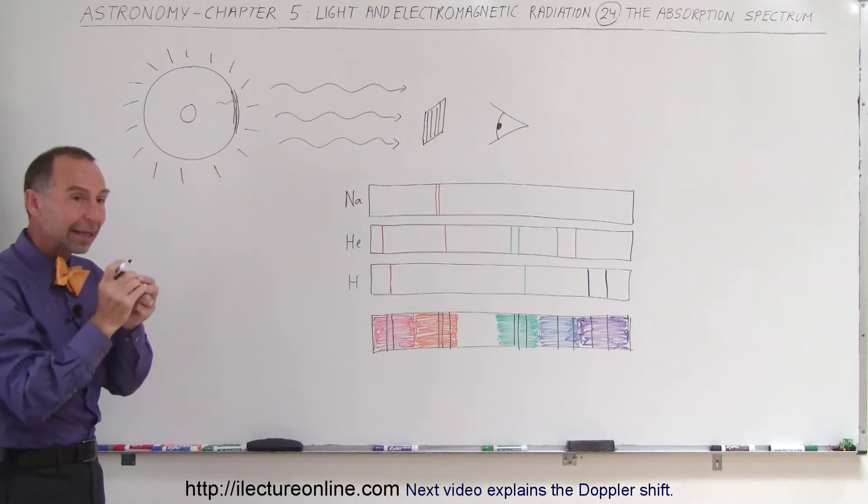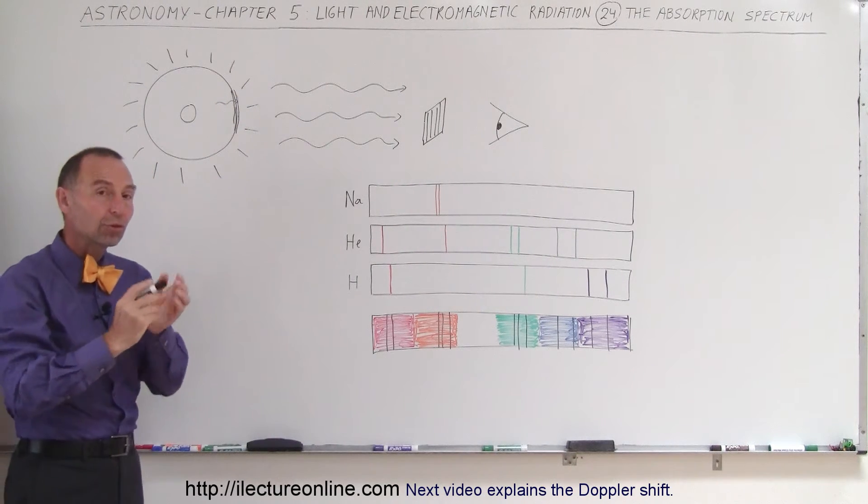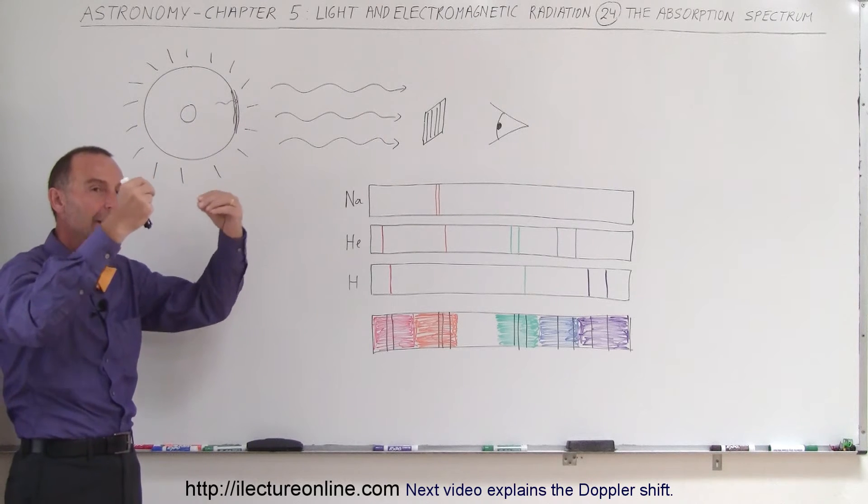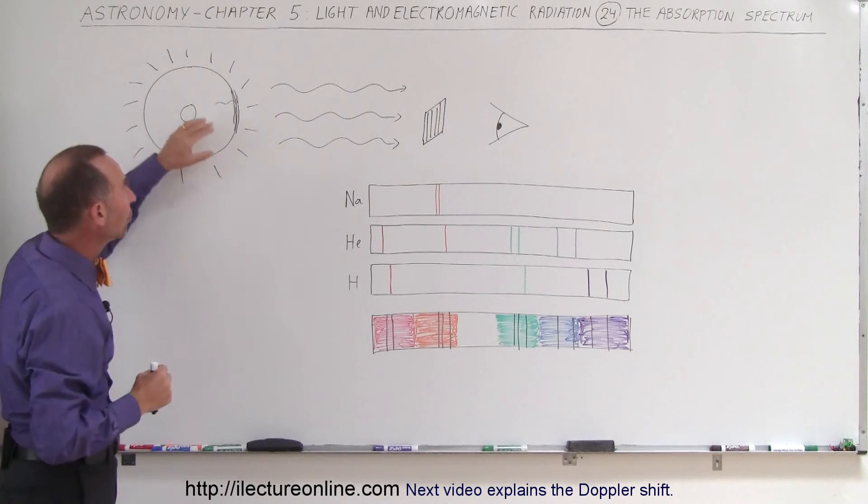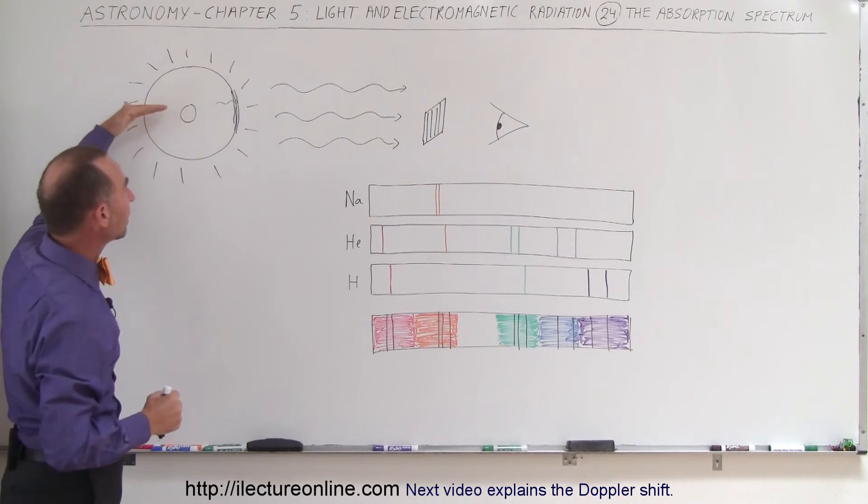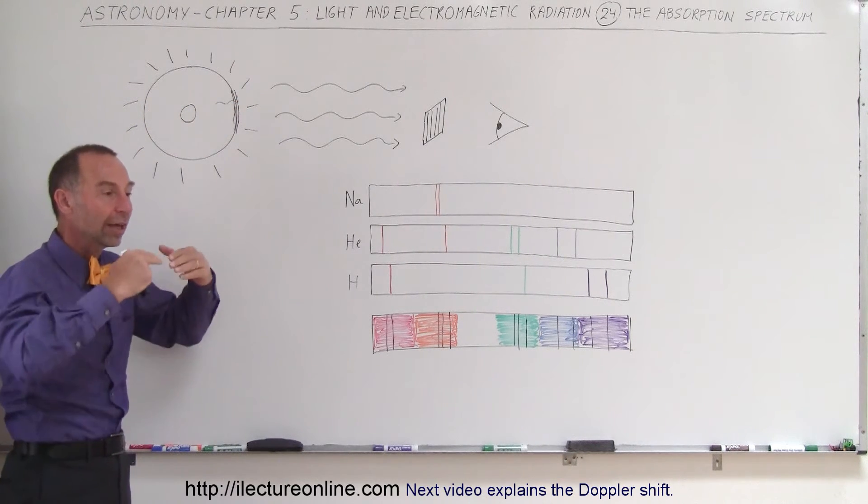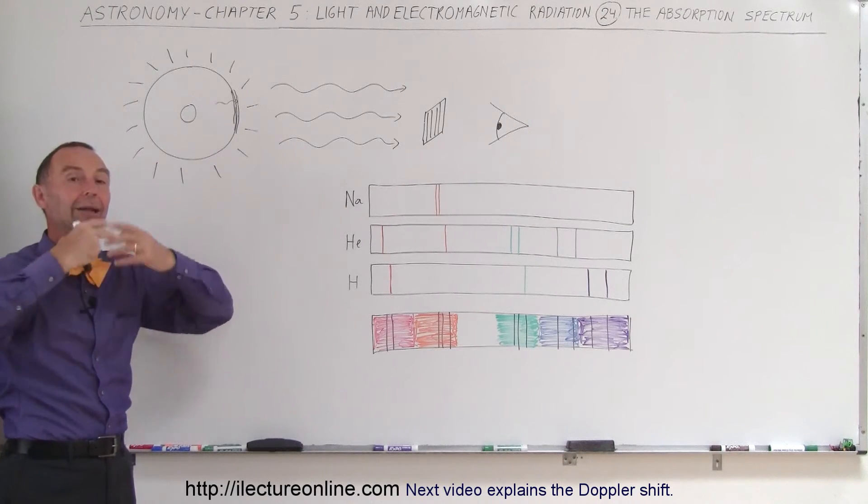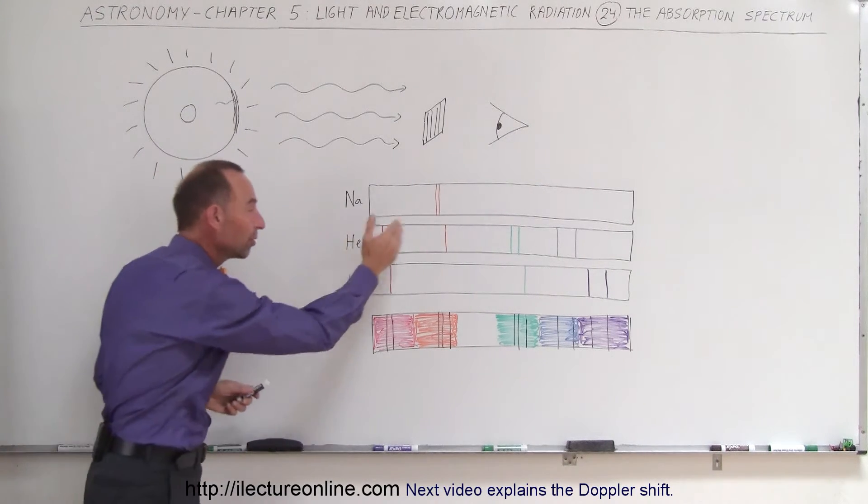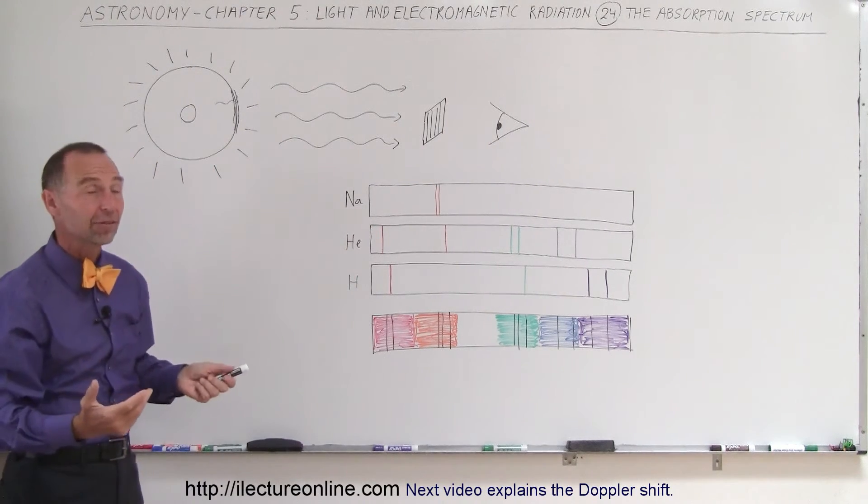It turns out that the electrons, at that point when the temperature is low enough, can actually come in and start occupying the lower orbits of the atoms. And then when the radiation from the inside of the sun passes through those relatively cooler layers, it causes electrons to jump up and absorb the energy of those particular frequencies, and therefore they're missing.